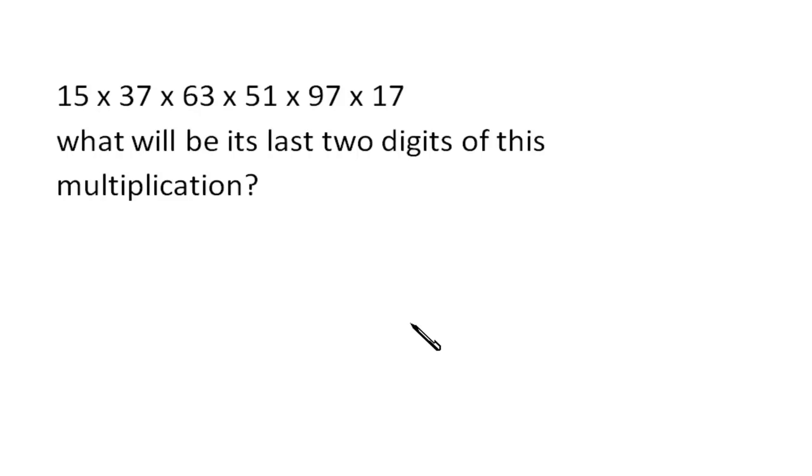Hello friends, welcome to Learners Planet. I'm solving a question sent by a student. Here we have to find out the last two digits of this multiplication: 15 × 37 × 63 × 51 × 97 × 17. It seems tedious because there are six numbers to be multiplied, and it will be a time-taking process if you multiply the numbers to get the last two digits.